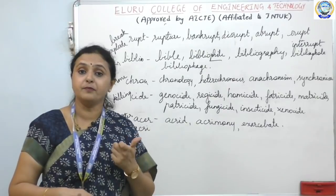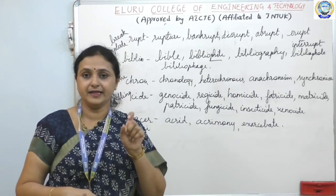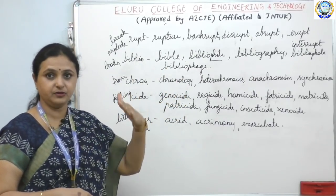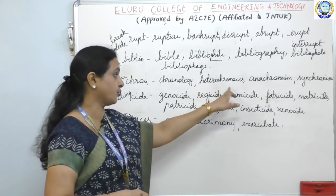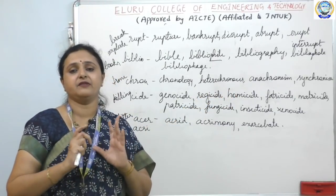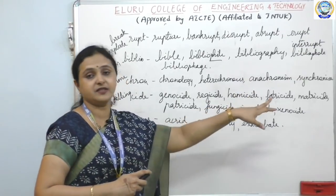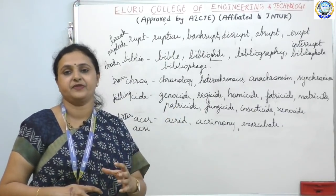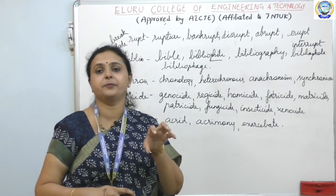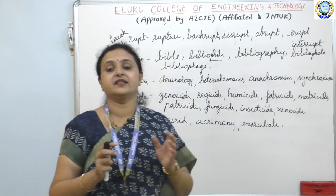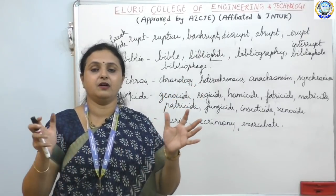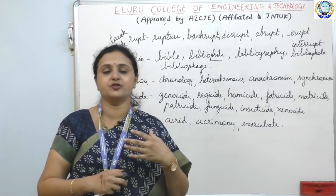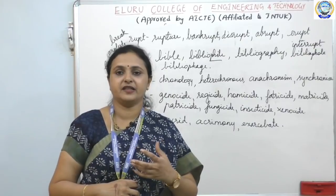Chron means time. So chronology is the study of time — the time sequence. Heterochronous covers many time periods. Anachronism — something that is out of a particular period in history, something that does not belong to that period. Synchronize — make everything fall in one particular time, like synchronizing music or speech.